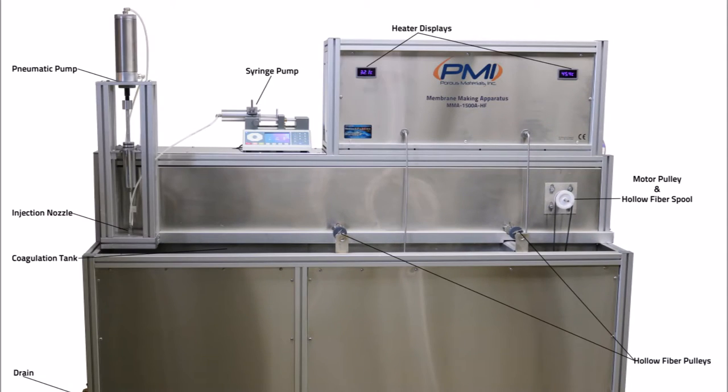Here we have a basic layout of the machine. From left to right we have the pneumatic pump, injection nozzle, coagulation tank, drain, syringe pump, heater displays, motor pulley and hollow fiber spool, and the hollow fiber pulleys.